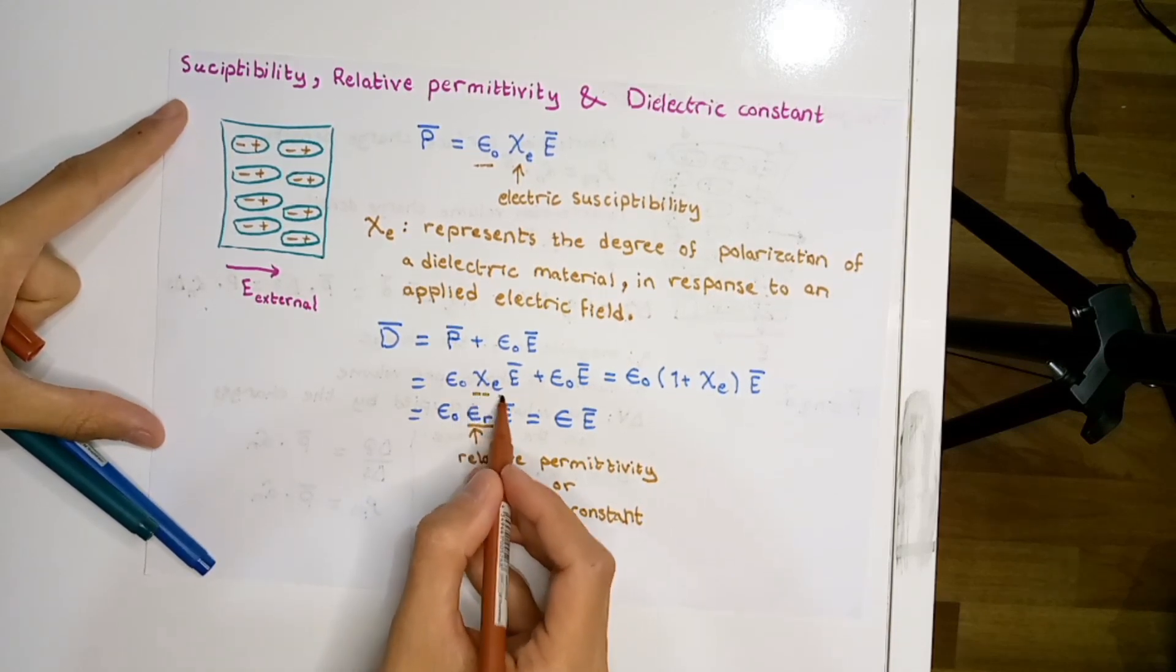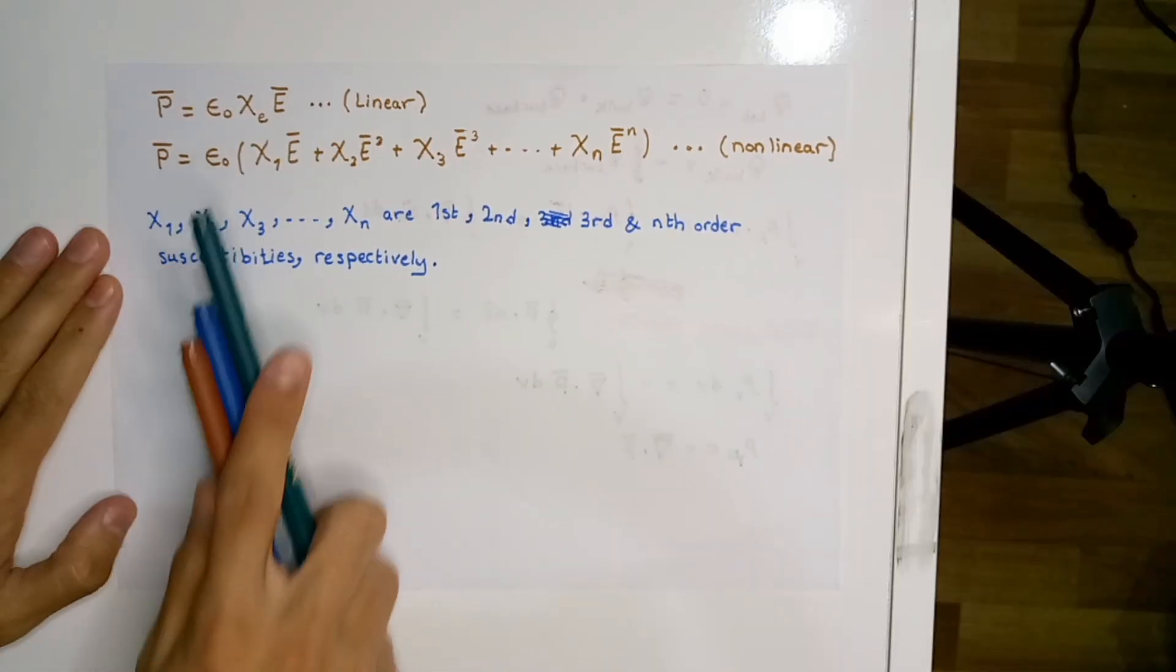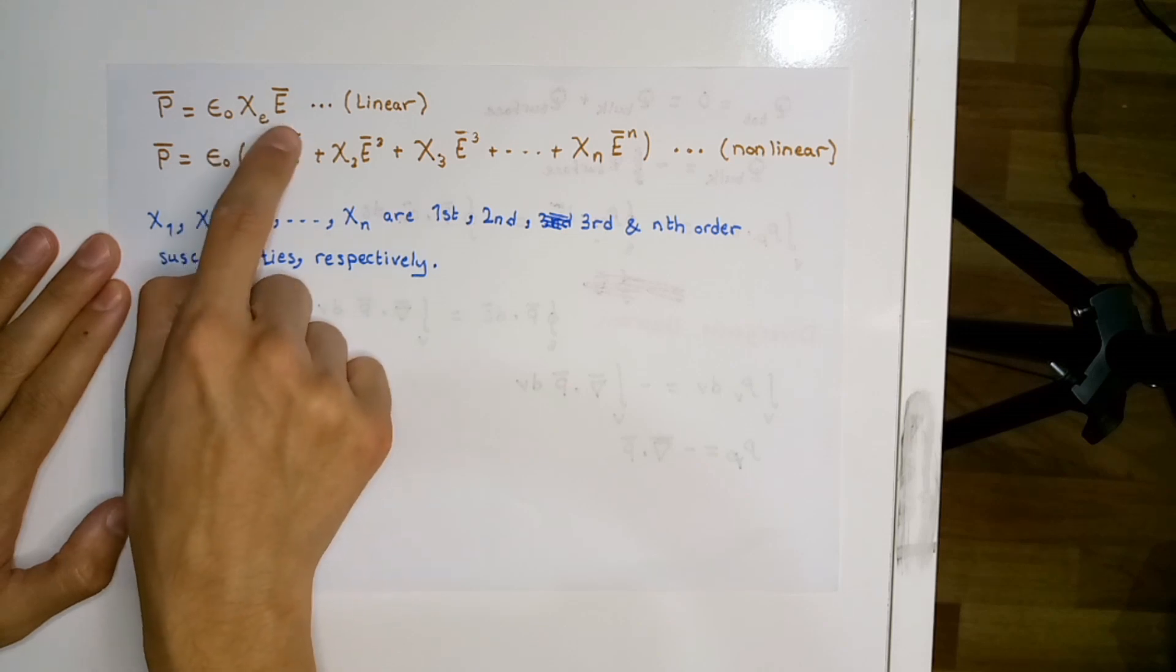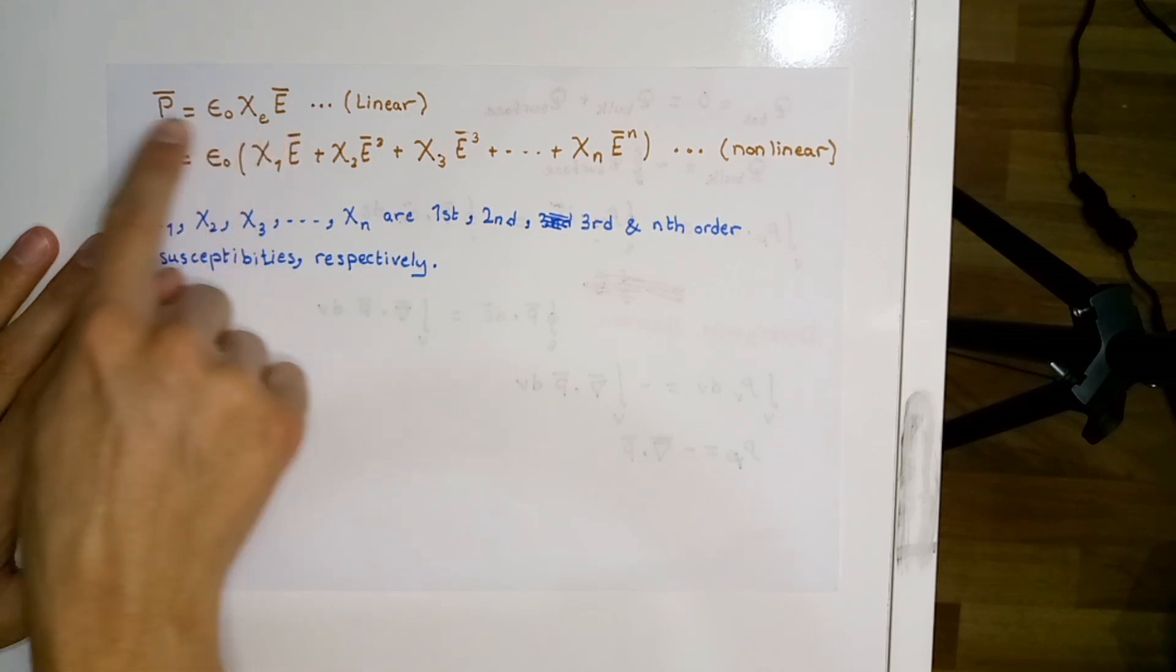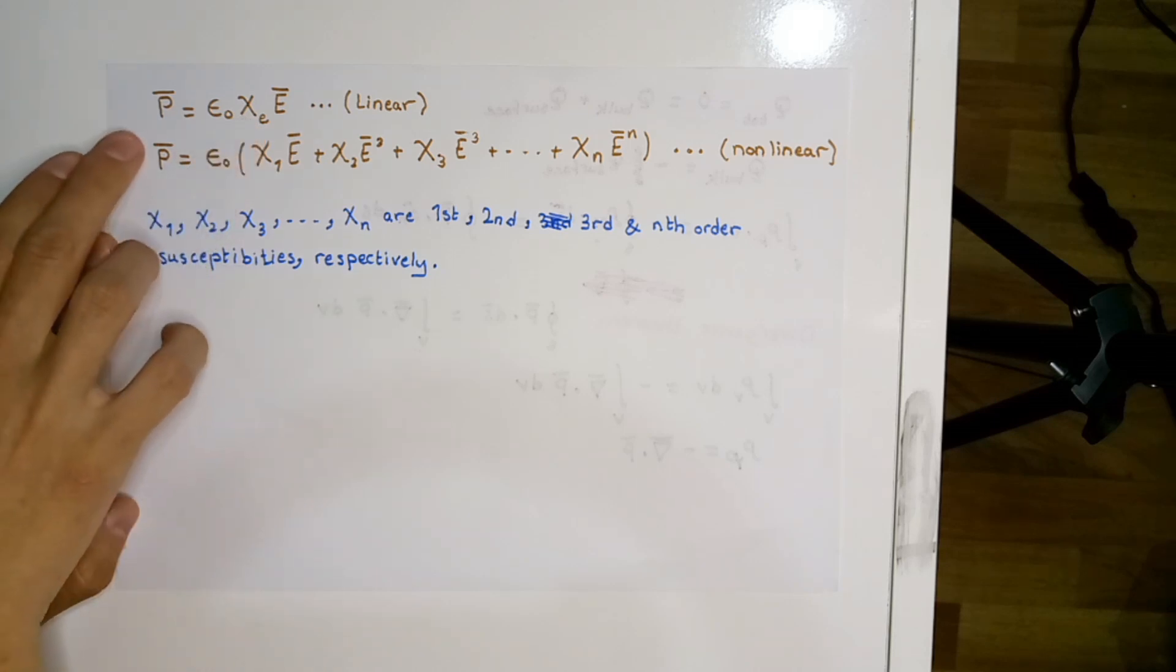As we said, the polarization of dielectrics is directly proportional to the applied electric field by this equation that we have shown before. According to this point, we can classify dielectrics into two main types.